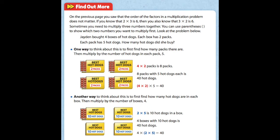Sometimes you need to multiply 3 numbers together and you can use parentheses to show which numbers you want to multiply first. Let's look at the problem below. Jayden bought 4 boxes of hot dogs. Each box has 2 packs inside of it, and each pack has 5 hot dogs.